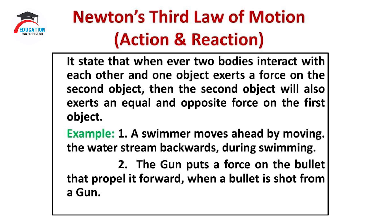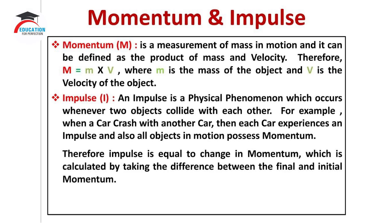The first example is about a swimmer. A swimmer moves ahead by moving the water stream backwards during swimming. The second example is about a gun — the gun puts a force on the bullet that propels it forward when a bullet is shot from a gun. This was about Newton's third law of motion with its examples.